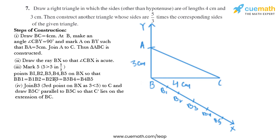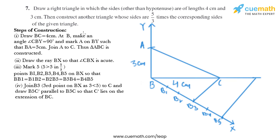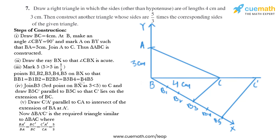Now in the next step we need to join B3 to C and draw B5C' parallel to B3C so that C' lies on the extension of BC. So let's join B3 and C, and after that we need to draw a line parallel to B3C. We'll name the point of intersection as C'.